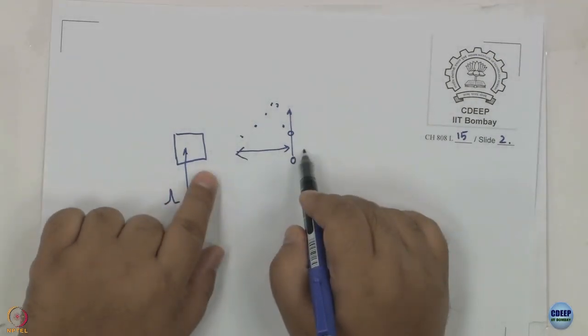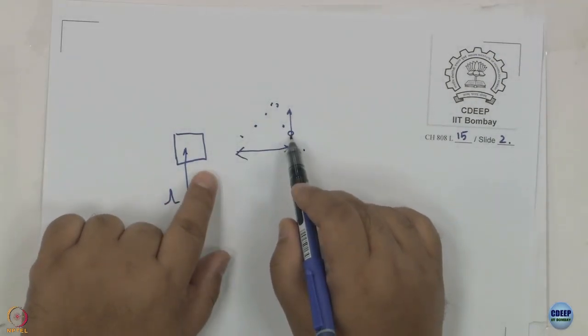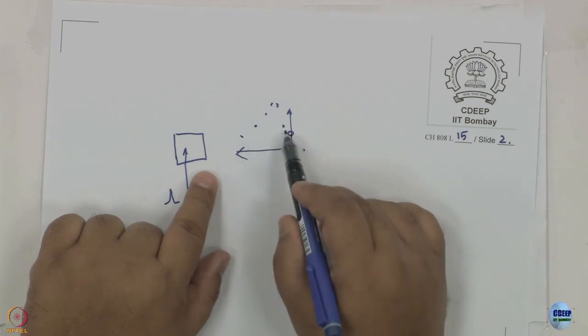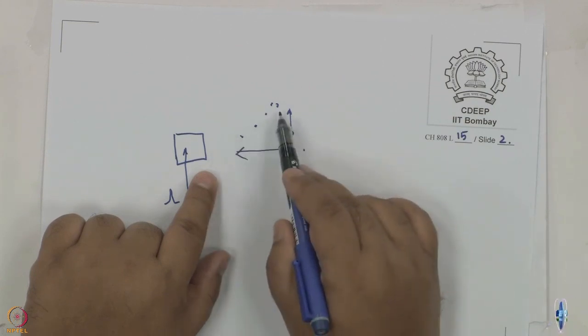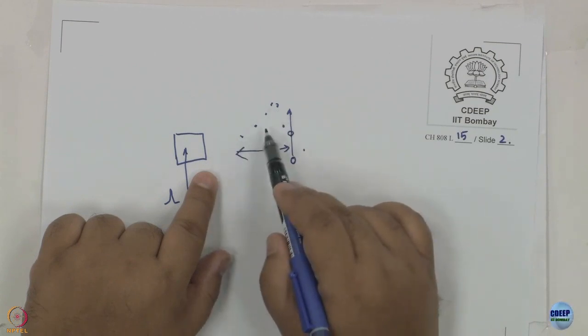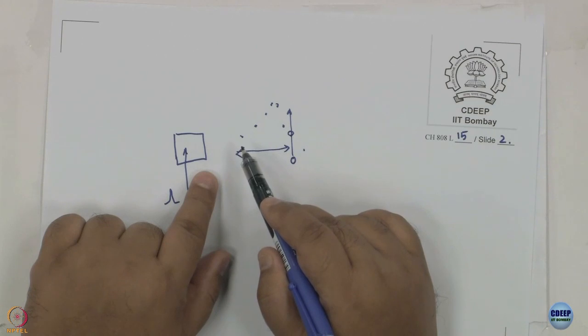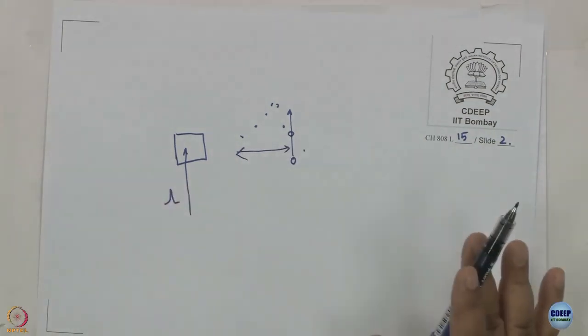This is space, but photons that have been emitted first would have reached here. Photons that have been emitted after some time would have reached here. Photons that have been emitted even later have reached here and so on. So, does this not look like a fluorescence decay? And is that not the histogram that we have been trying to construct all along?